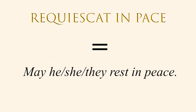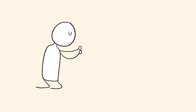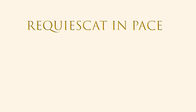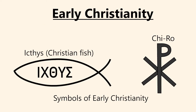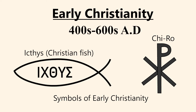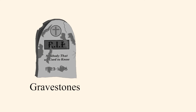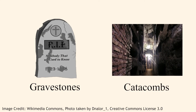Requiescat in pace translates to 'May he, she, or they rest in peace or harmony,' and was used as a kind of prayer and phrase by early Christians, wishing that the deceased individual live a peaceful afterlife. The phrase Requiescat in pace, or plural Requiescant in pace, can trace its roots back to early Christianity during the late Roman Empire and shortly after, when forms of the phrase started to be used by early Christians on gravestones and possibly catacombs at around the 5th century AD.